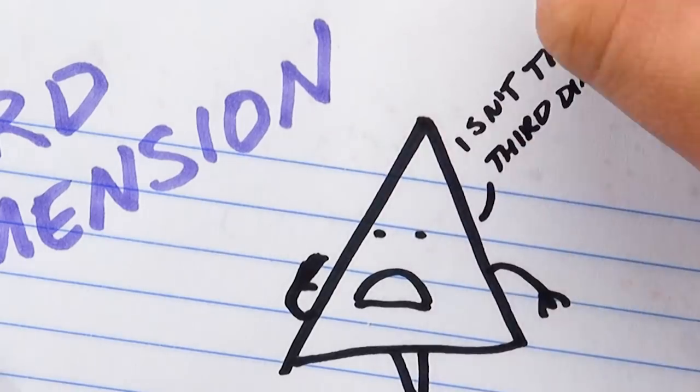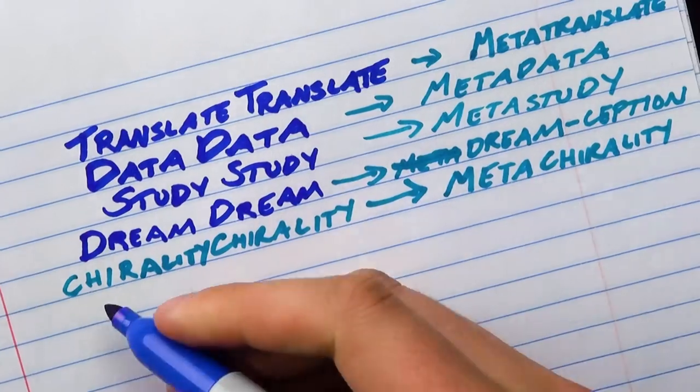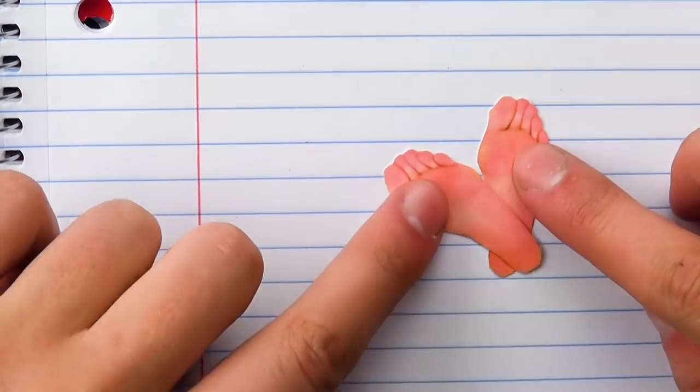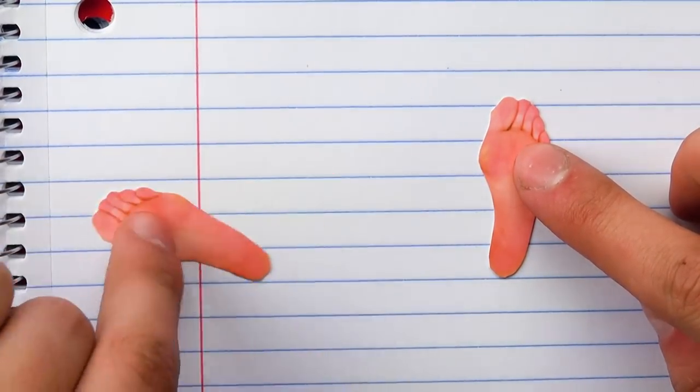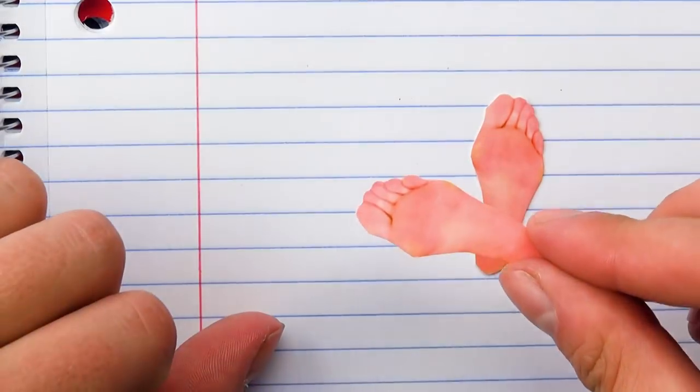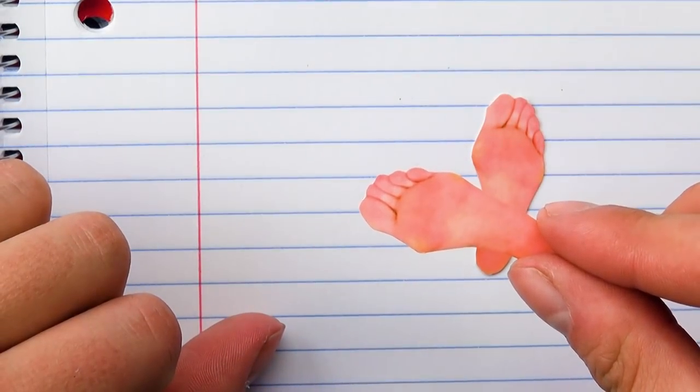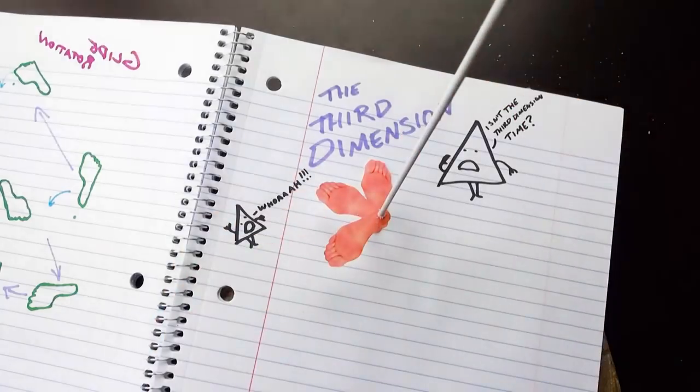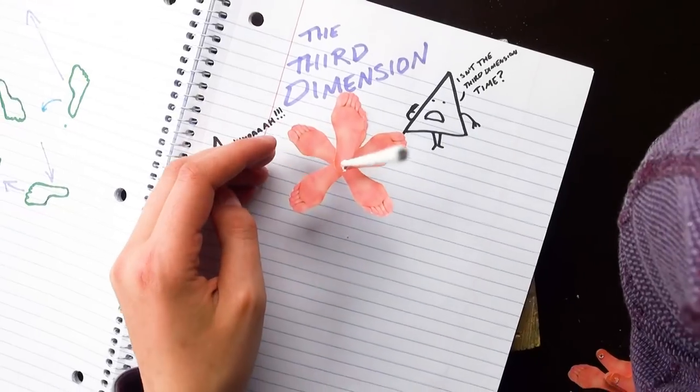But wait, says two-dimensional you. Isn't the third dimension time? Maybe sometimes, but we'll make time for time another time. Anyway, so you take your thing and rotate the thing, and instead of translating it along the plane, you bring it out into the third dimension! Well, that wasn't very dramatic. And now we have to get it to stay there. There you go. And why not do it again? And again and again until it comes back around.